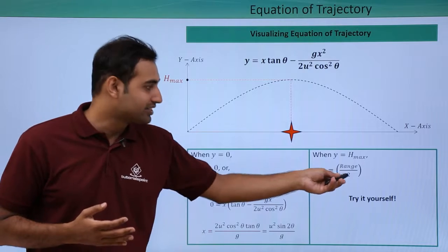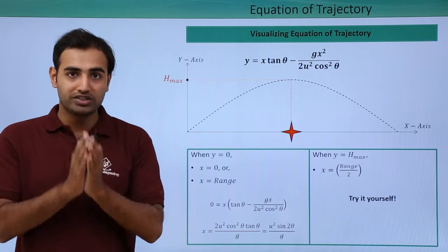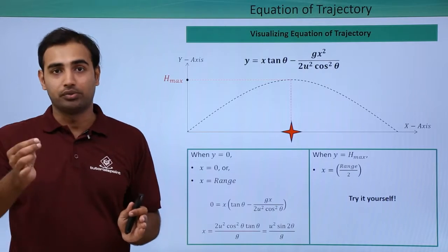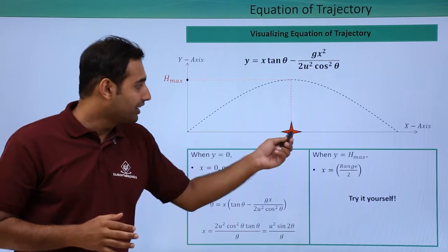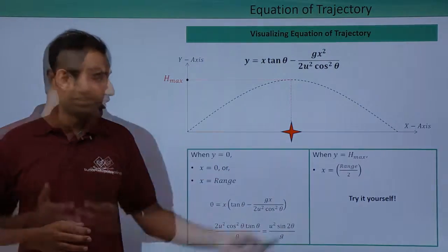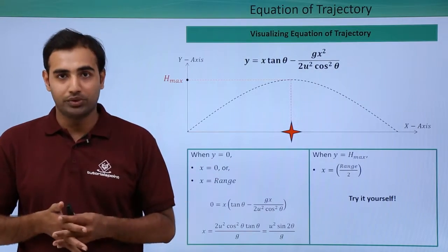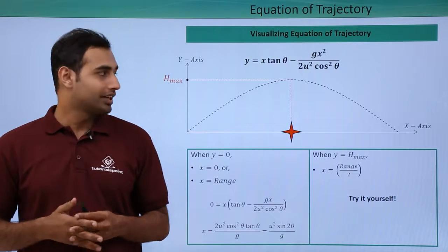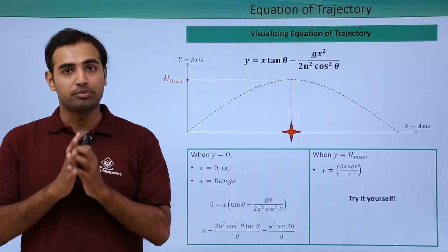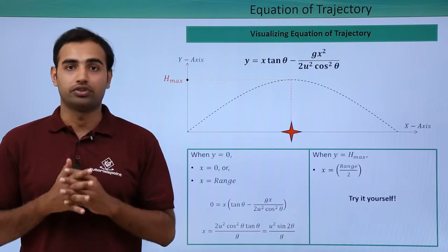you will obtain the x value as range upon 2. So what we see from here is the maximum height of the entire parabolic motion is attained at half the range value or at exactly the midpoint of the range. Now this calculation, you can do it by yourself. It will also help you to understand the concept better. There are several other things you can directly infer from the equation of trajectory, which makes this equation very important for you.